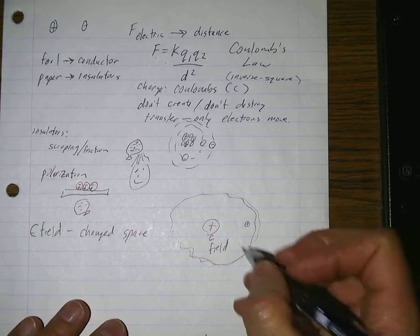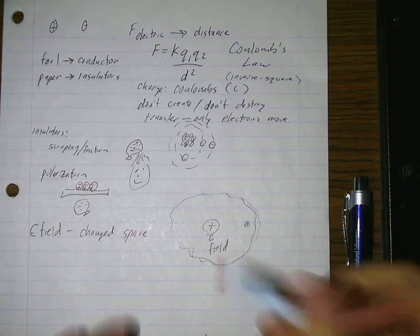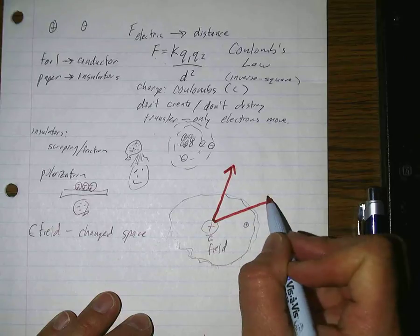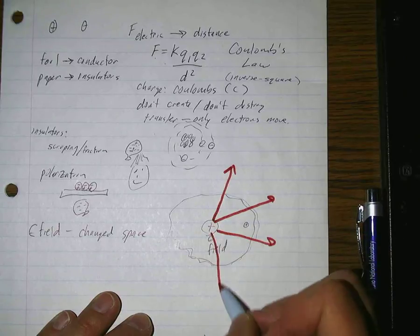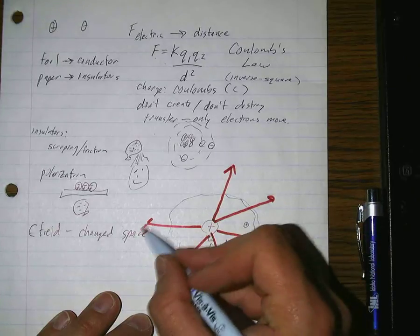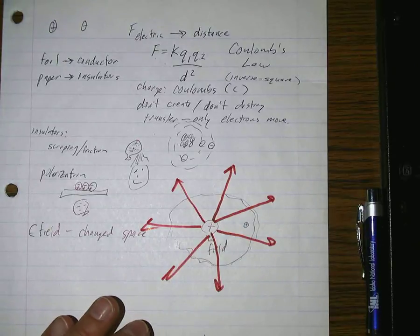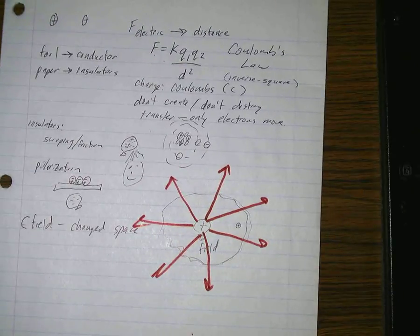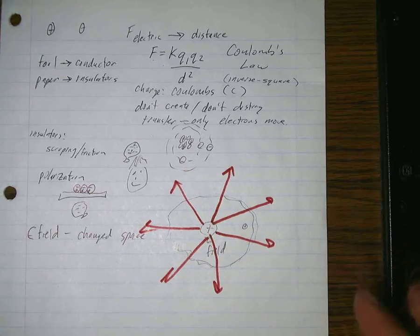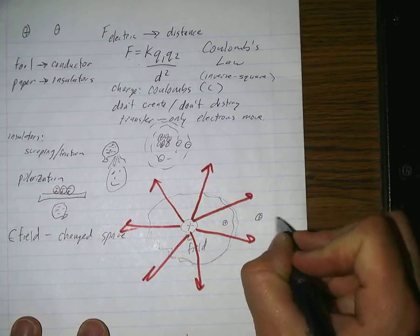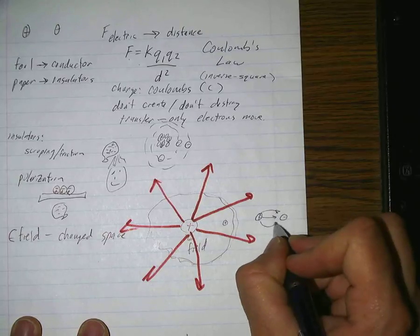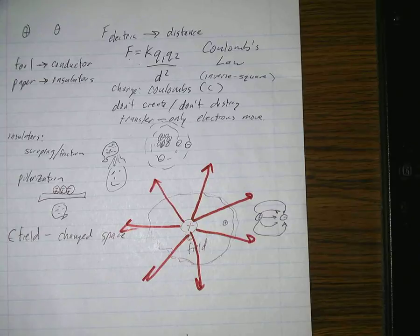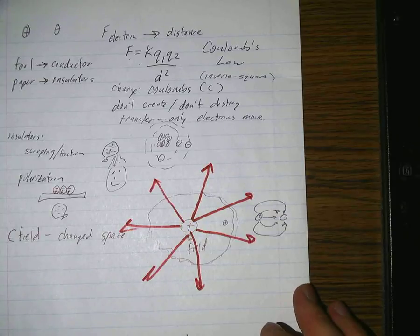We had ways of representing electric fields. We said let's draw lines that represent the force that a positive test charge would feel. We had several different configurations for that. The spacing meant how strong it was, and the arrows told you what direction the force would be in. So if you had two charges, you would get field lines that kind of bend around like that, and then we had others that we learned how to draw as well.